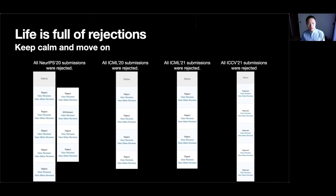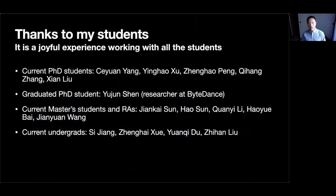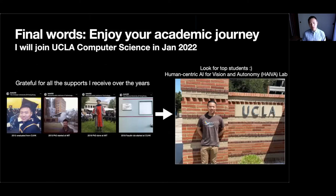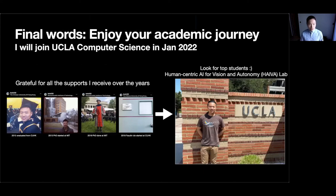Those are the two lessons I'd like to share. Lastly, I would like to say thanks to all my students — it has been a joyful experience working with all those talented students. Here are some final words: I think it's very important to enjoy your academic journey, and you have to be really passionate about this path if you would like to become a researcher in this field. For a life update: I will be joining UCLA Computer Science early next year. I'm very grateful for all the support I received over the years. I will build a new lab on human-centric AI for vision and autonomy — I call it the NAVEL lab — and I'm also looking for top students to join me to pioneer this direction.